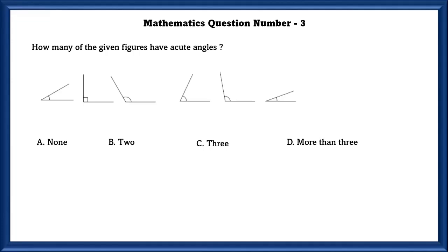Mathematics question number 3. How many of the given figures have an acute angle? The first one is an acute angle, the fourth one is an acute angle, and the sixth one is an acute angle. So there are three acute angles.